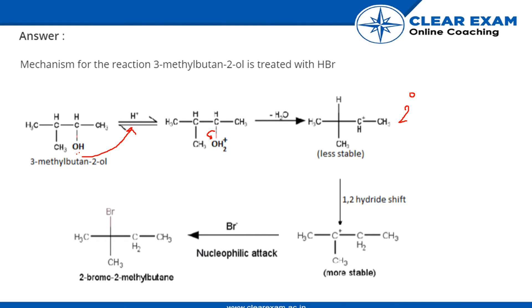Now what we know is that it will be experiencing hydride shift, which means that H from this carbon will shift to this carbon and the positive charge will be taken away by this carbon. So now this is a much more stable carbocation because it is a 3-degree carbocation. It is attached to 3 carbons—C1, C2 and C3. So it is more stable.